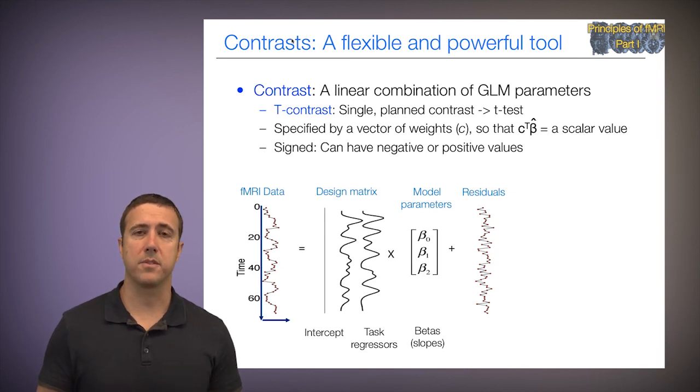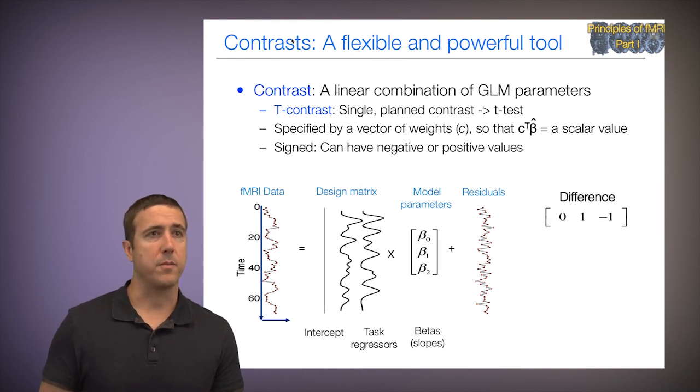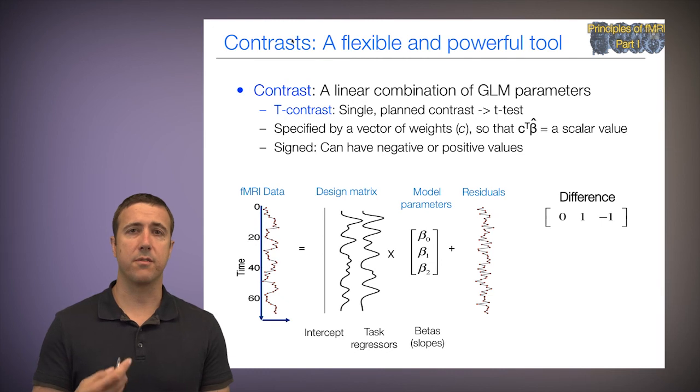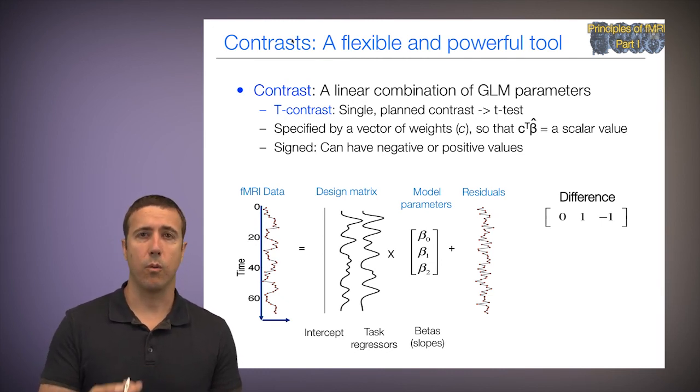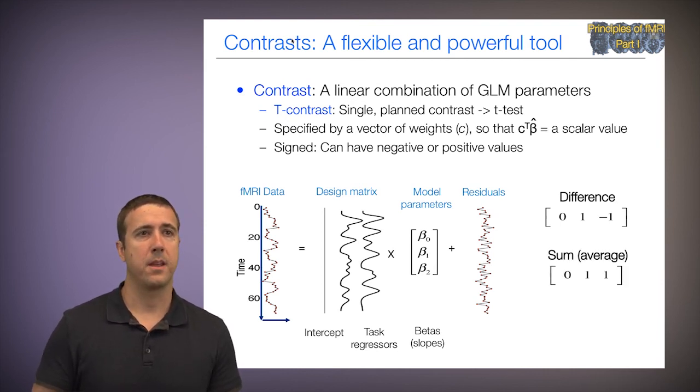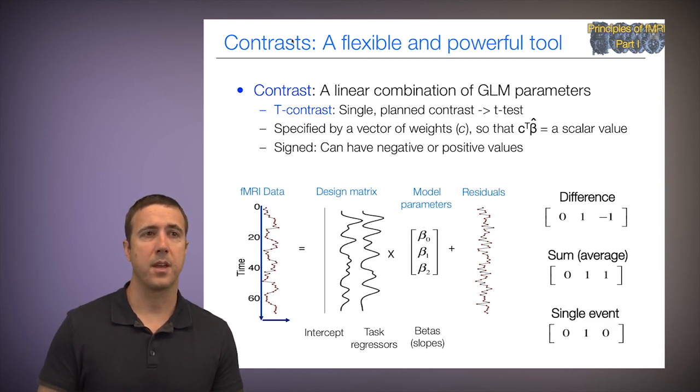So let's apply that to our famous and non-famous face example here. I've got two parameter estimates that I'm interested in: beta 1 for famous, beta 2 for non-famous. I can specify a difference contrast, which is 0 for the intercept, 1 for the famous, and negative 1 for the non-famous faces. That gives us the famous minus non-famous difference. This contrast specifies the sum or average across the two face types, so this essentially gives me face versus rest. And we can test a single event. So 0, 1, 0 tests only the famous faces, or beta 1, against the implicit intercept, and it asks is there a significant positive or negative response to famous faces.